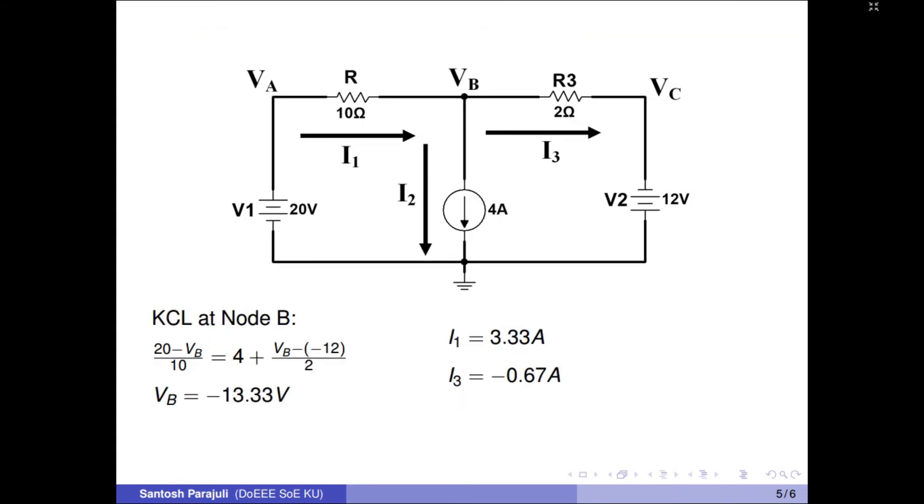KCL at node B yields potential of node B which is equal to minus 13.33 volts. After finding VB, I1 and I3 are computed as 3.33 amperes and minus 0.67 amperes.